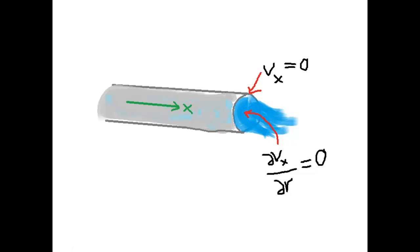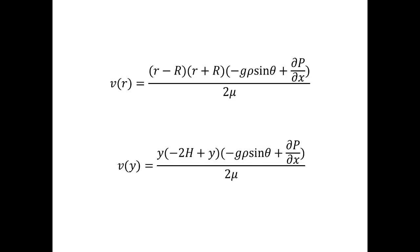Now that we have our differential equation in one dimension and the two boundary conditions needed to solve it, there is nothing left to do but to solve it. We can do this using Mathematica. In the pipe, the velocity at a distance r from the center is given by this formula. And in the river, the velocity at a height y from the river bed is given by this formula.